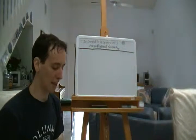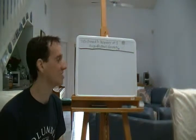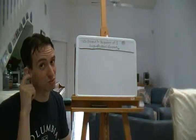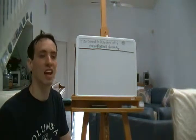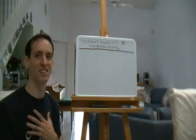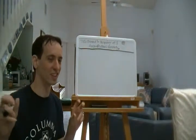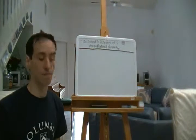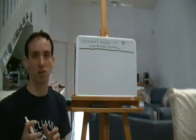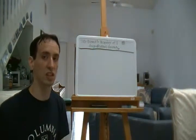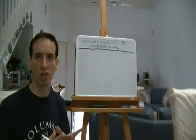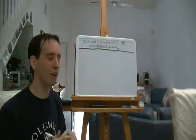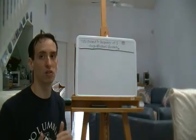Hi everybody! Welcome back to Super Awesome Calculus. Today we're going to go over the first chapter in James Stewart's book, which is entitled Functions and Models. I call this section Functions. Today we're going to look at functions because functions are basically the principal object that we'll be working with in calculus. So it's very, very important that you have a solid understanding of what functions are.